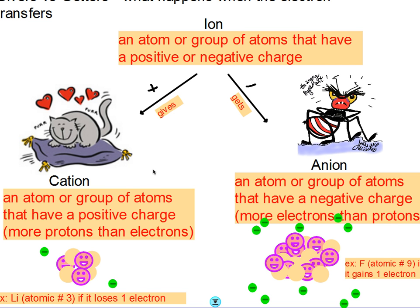Remember that only the electrons move, not the protons. Lithium should have three protons and three electrons, but this one only has two. So it has more protons than electrons — that's a positive thing, it gave up its negativity — and so this is a cation. If it gains electrons, we're getting more negativity in, and then I have more electrons than protons — that's negative — and so we call it an anion. Fluorine has nine protons and should have nine electrons, but here there are ten, so it's negatively charged — an anion.